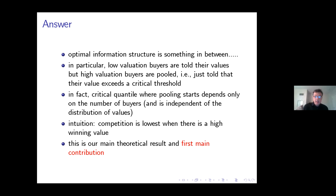That's quite the opposite from optimal auction design, where the optimal reserve price does not depend on the number of buyers, but does depend on the distribution of values. In the optimal information design, it's exactly the opposite. The intuition is that competition is the lowest when there's a high winning value — then the distance between first and second order statistic is largest, meaning the information rent is largest. We essentially want to compress the information, even at the expense of efficiency, because whenever we pool the information, we deprive ourselves of being able to distinguish who really has the highest versus second highest value. But that loss in efficiency is more than offset by the gains from the compression of information.